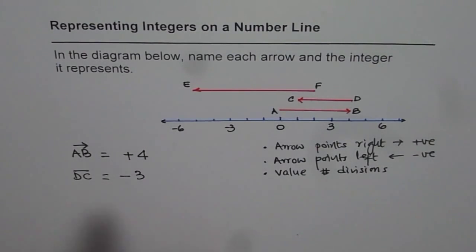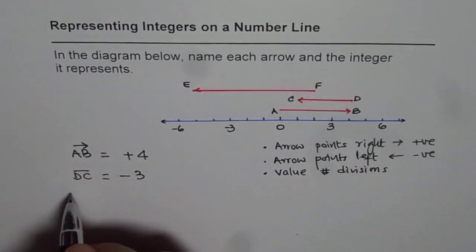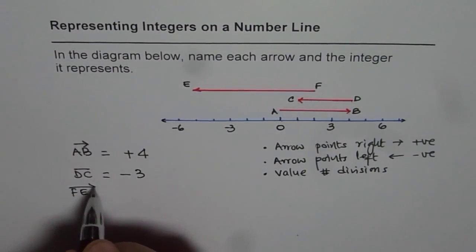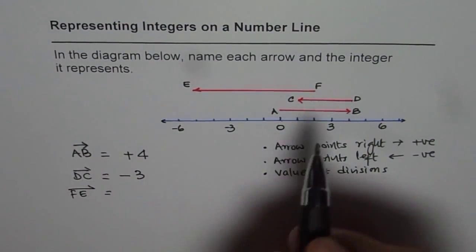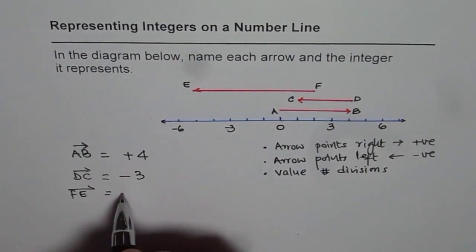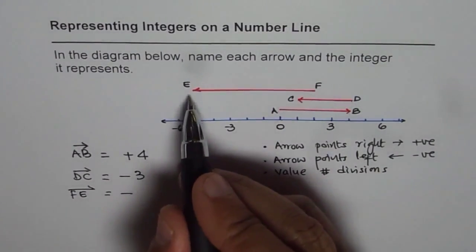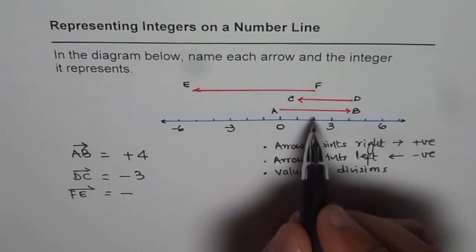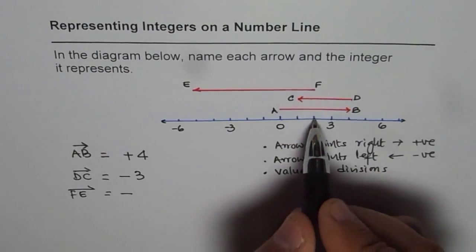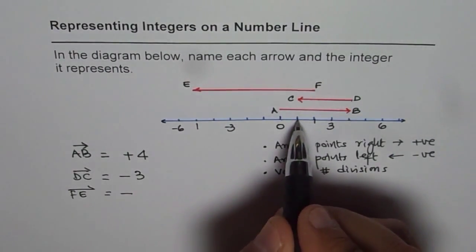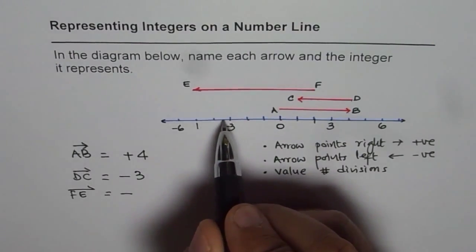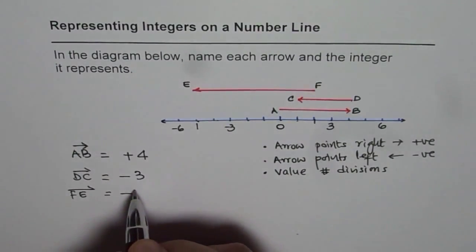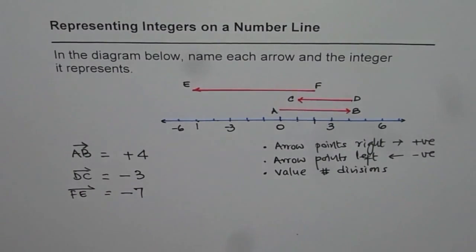Similarly, now you can write down what is F to E. From F to E, the integer is negative since it points left. And how much? We will see how many divisions. From F, which is this point, to E, which is here, let's count 1, 2, 3, 4, 5, 6, 7. So it is minus 7. So minus 7 is the value for the integer F to E.